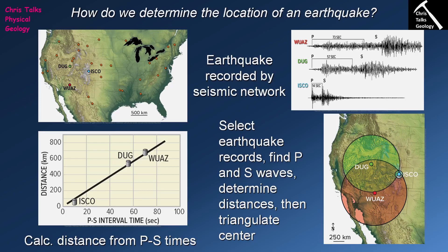We now know how far each seismic station is from the earthquake source. On a map, we draw a circle around each station, because the distance value represents the radius of a circle. For DUG, the radius is 550 kilometers, but we don't know in which direction — so the earthquake could be anywhere along the edge of that circle. On its own, this is not particularly helpful.